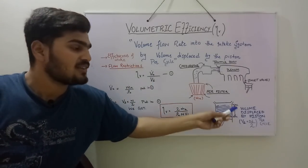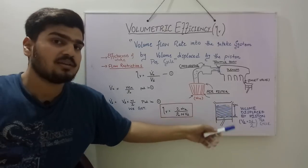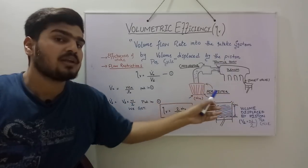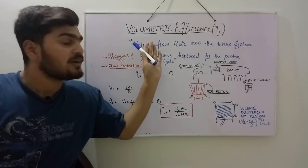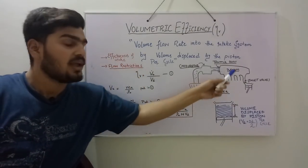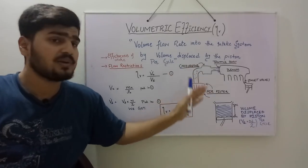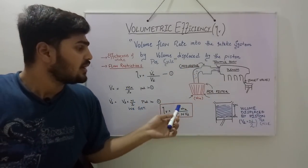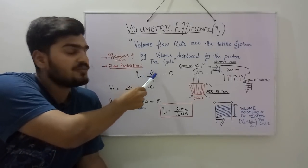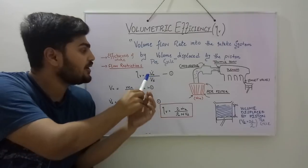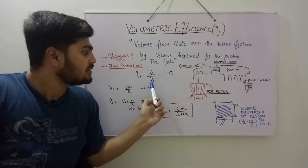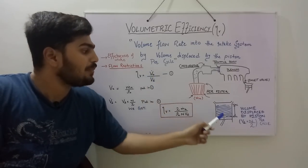Due to these restrictions, the amount of air which can actually be displaced into the cylinder is not equal to the actual volume that will be going into the engine. So volumetric efficiency is defining the effectiveness of the intake air system, and that's why it's called an efficiency. The volumetric efficiency is the actual volume flow rate of air going into your engine divided by the volume displaced by the pistons per cycle.